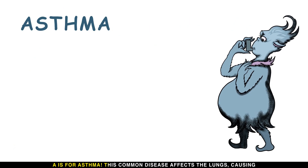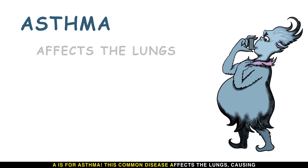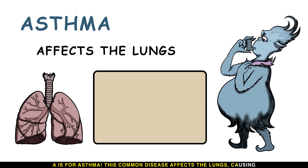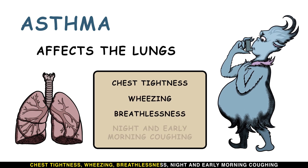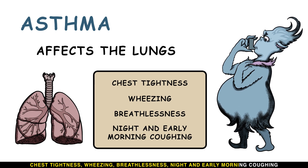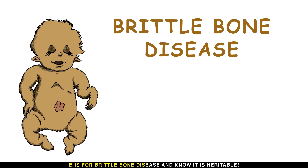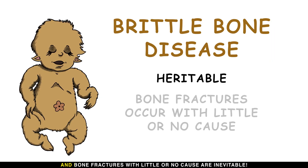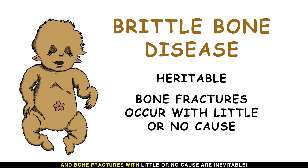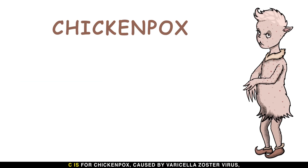A is for asthma. This common disease affects the lungs, causing chest tightness, wheezing, breathlessness, and night and early morning coughing. B is for brittle bone disease — it is heritable, and bone fractures with little or no cause are inevitable.